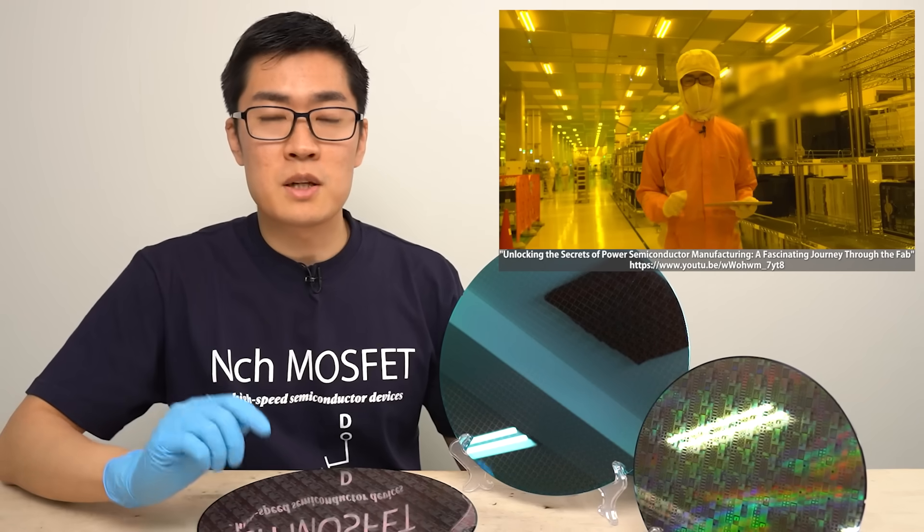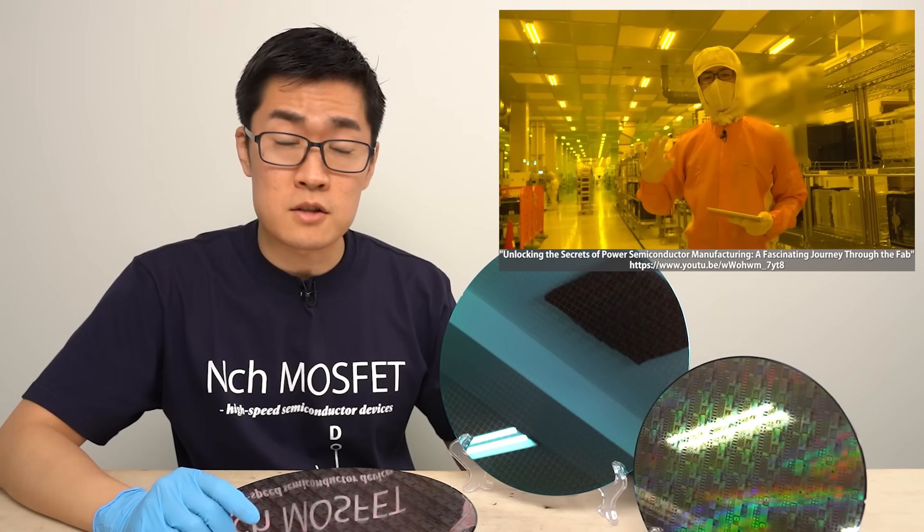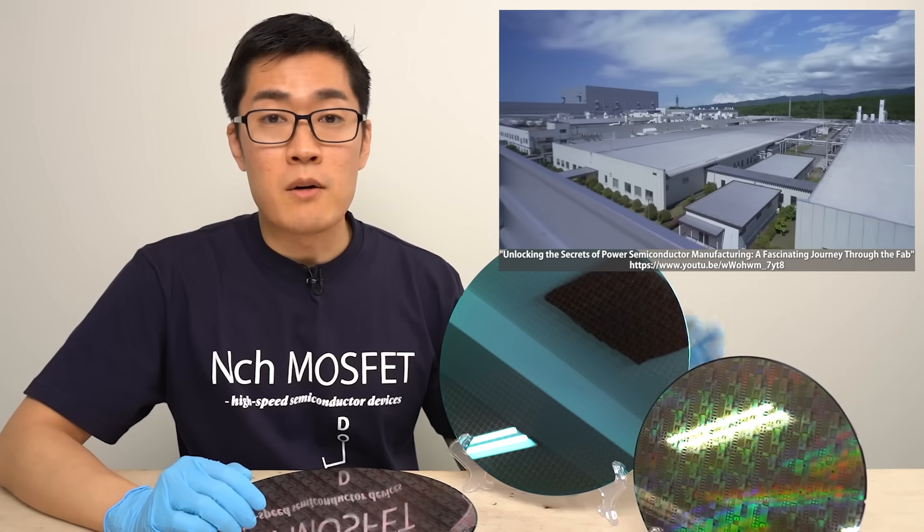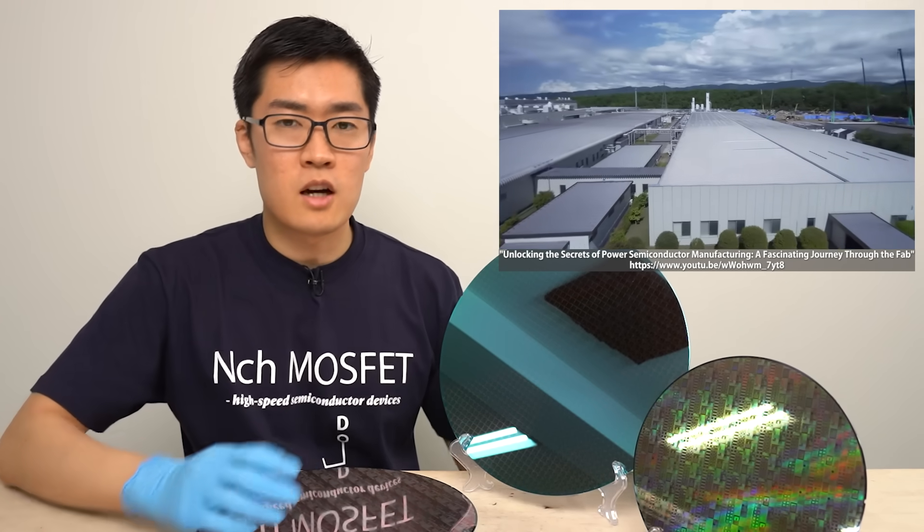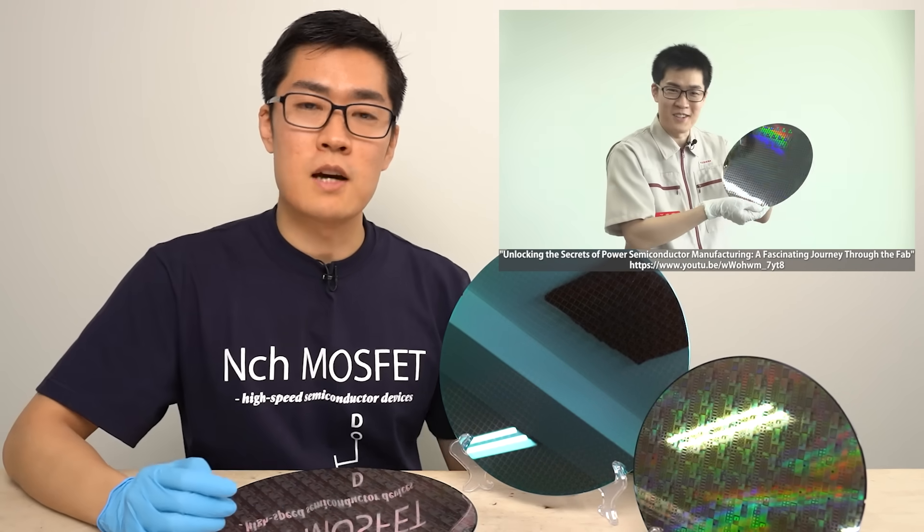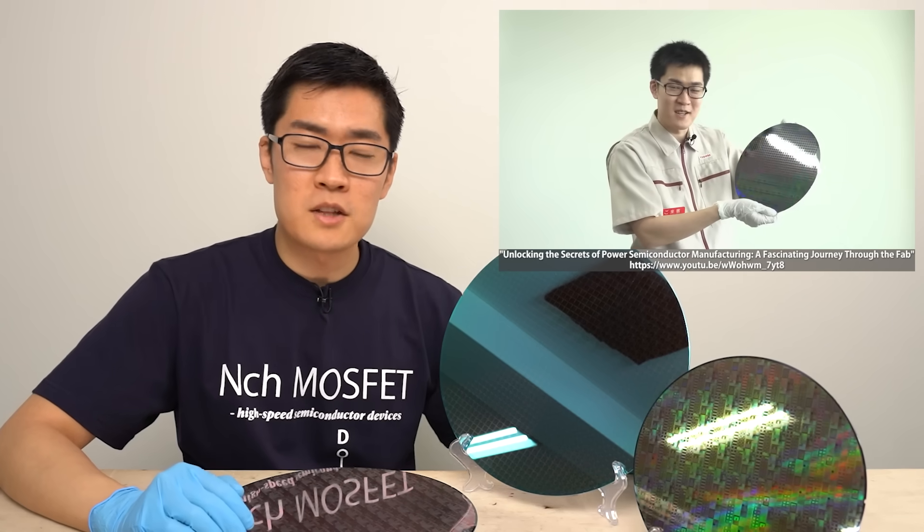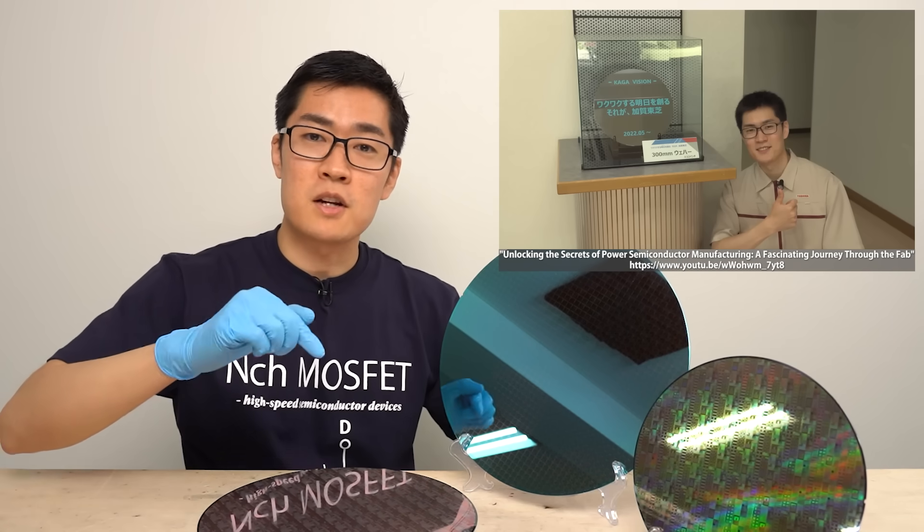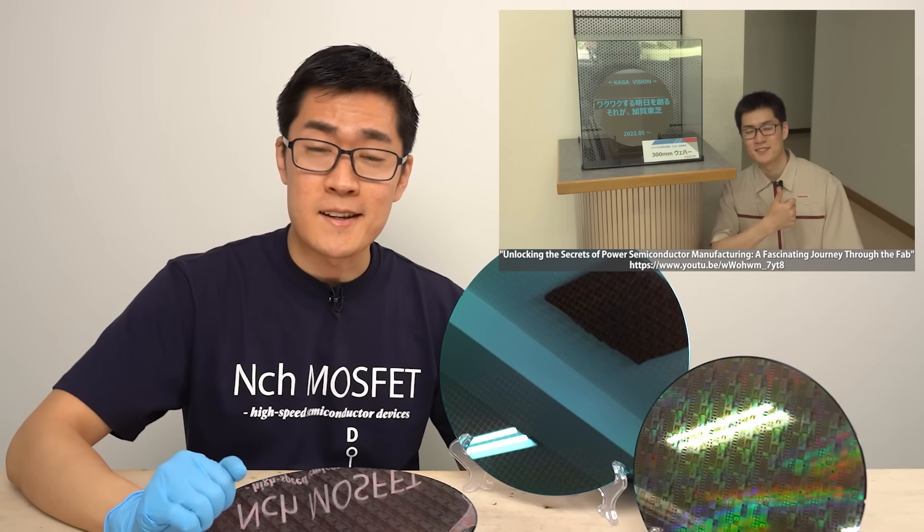The other day I uploaded a video of when I visited a Toshiba power semiconductor fab. At the fab, I saw a wafer of power semiconductors. Power semiconductor wafers look very different from these wafers for logic and memory chips. If you want to see how they manufacture power semiconductors in the fab, watch the video from the link in the description.